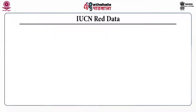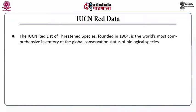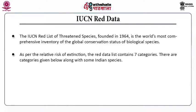The IUCN Red List of Threatened Species was founded in 1964. It is the world's most comprehensive inventory of the global conservation status of biological species. As per relative risk of extinction, the red data list contains seven categories — an important question from a competitive exam perspective.